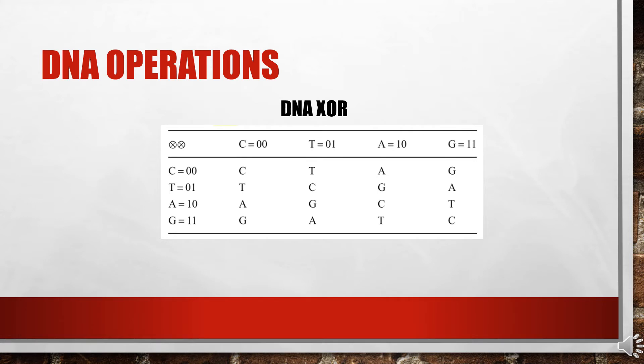The second method of encryption is using DNA XOR operation. In this case, for both the encryption and decryption process, we use DNA XOR. So there are two methods of encrypting using DNA rules: either we use DNA addition and subtraction, or we use DNA XOR.